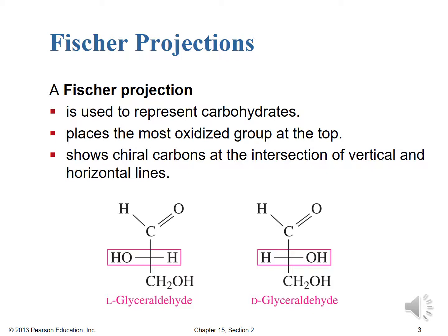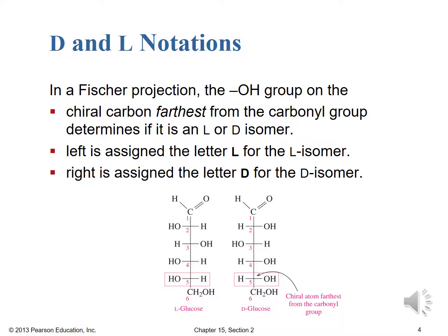It's always the last chiral carbon — the furthest chiral carbon away from the oxidized group, whether it's an aldose or a ketose. The D and L notation in a Fischer projection is determined by the OH group on the chiral carbon farthest from the carbonyl group. Left is assigned the letter L for the L isomer; right is assigned the letter D for the D isomer.